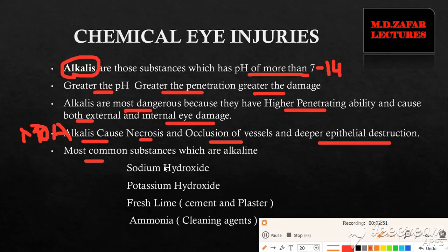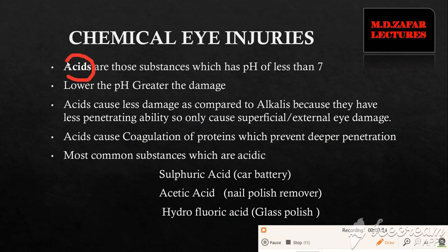The most common alkali substances include sodium hydroxide, potassium hydroxide, fresh lime which is found in cement and plaster, and ammonia which is present in cleaning agents. Now further talking about acids — they are substances which have a pH of less than 7, and the lower the pH, the greater will be the damage.